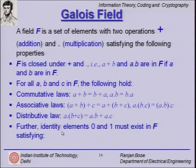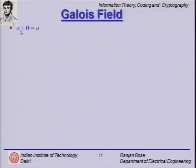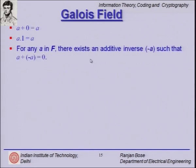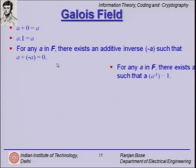Identity elements 0 and 1 must exist in F, satisfying: a + 0 = a and a · 1 = a for any element a. For any element a in F, there exists an additive inverse (−a) such that a + (−a) = 0. If a + b = 0, then b is called the additive inverse of a, and every element must have one.